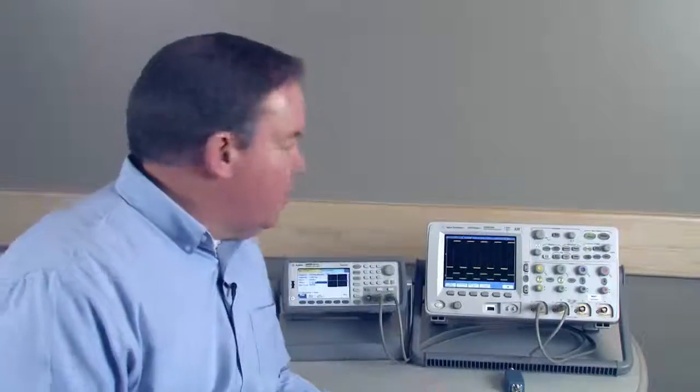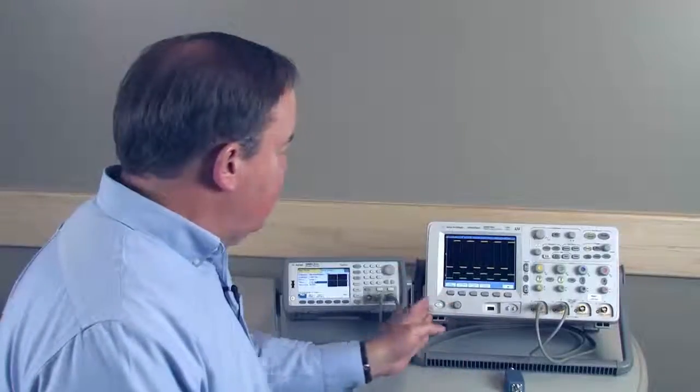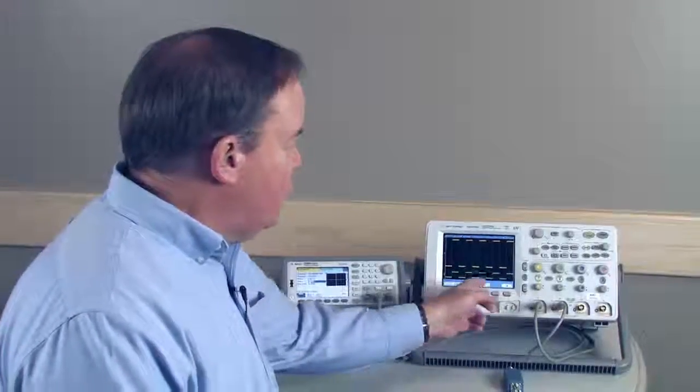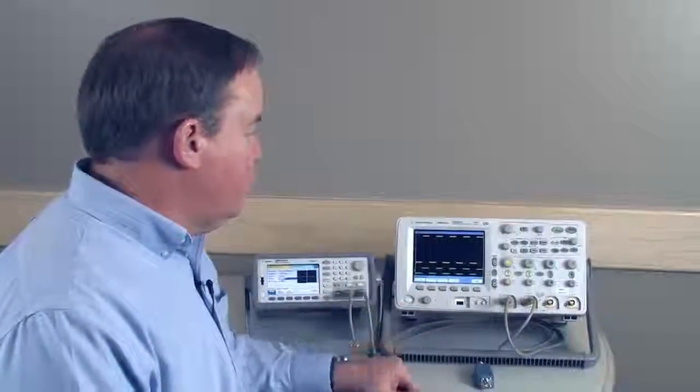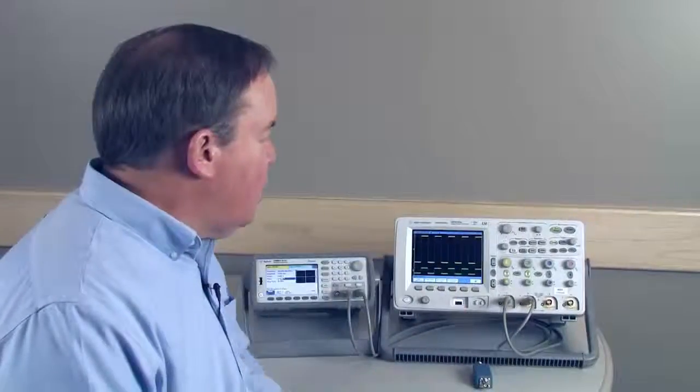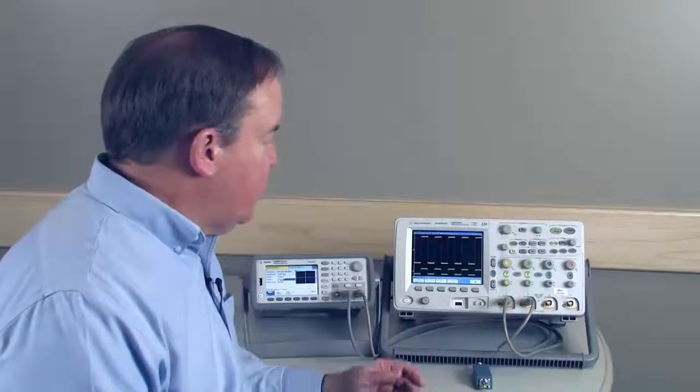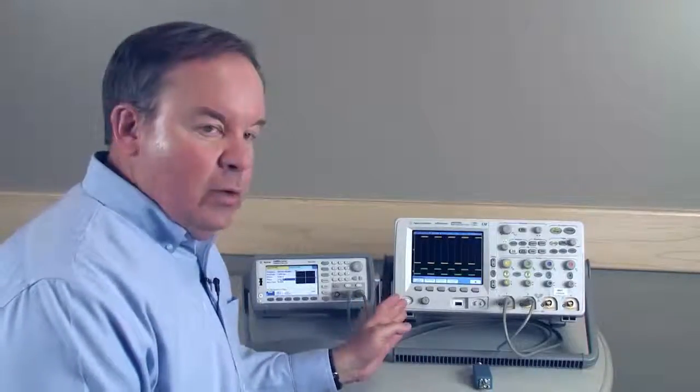As we look over at the oscilloscope here, we can see I have two waveforms up. The second channel in green is the clock waveform coming out of channel 2 of the generator. The first, the taller yellow waveform, is the data coming out of the generator. In this case, it's just a square wave.